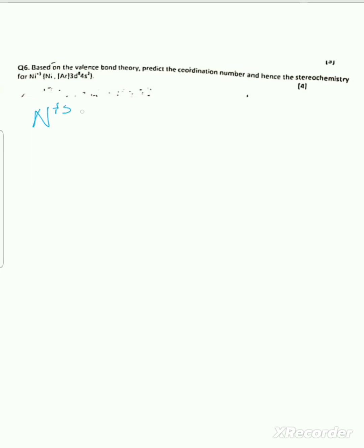So here is nickel — its electron configuration is [Ar] 3d⁸ 4s².